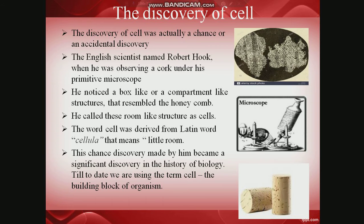Now let us enter into the discovery of cell. The discovery of cell was not a pre-planned one — it was a by-chance or accidental discovery. It was English scientist Robert Hooke who, when observing a cork under his primitive microscope, noticed a large number of box-like or compartment-like structures that resembled the structure of a honeycomb. He called these room-like structures cells, and the word cell was derived from the Latin word 'cellula', which means little room.